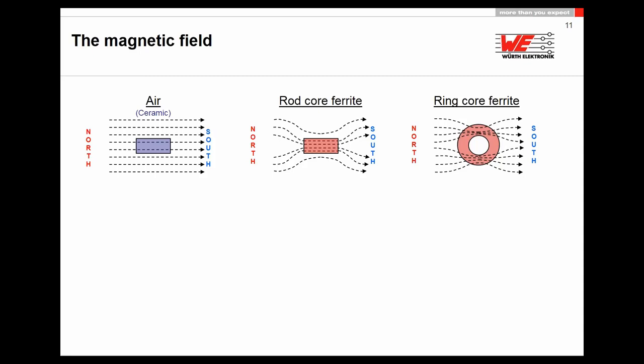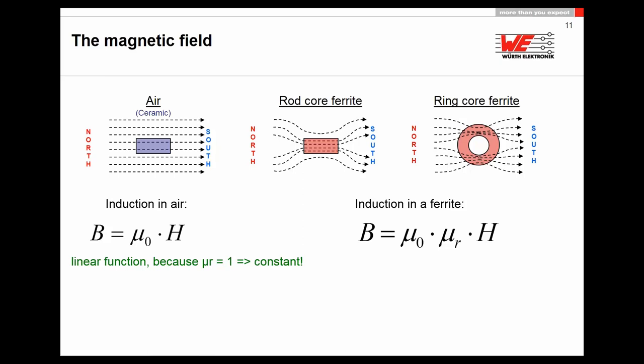If you generate a magnetic field in air, it travels in a straight line and is not strongly influenced. As soon as you apply a ferromagnetic material, these magnetic fields take the easier path and couple through. For an air choke, B = μ₀ × H (since μR = 1). With a ferrite core, B = μ₀ × μR × H. μ₀ is the vacuum permeability constant; μR is called relative or initial permeability.